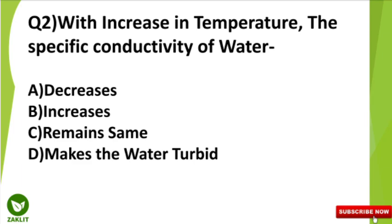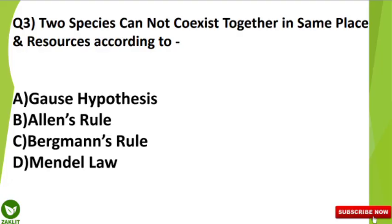The third question is: two species cannot coexist together in the same place and resources according to which of the following hypotheses or rules? It's a basic concept.